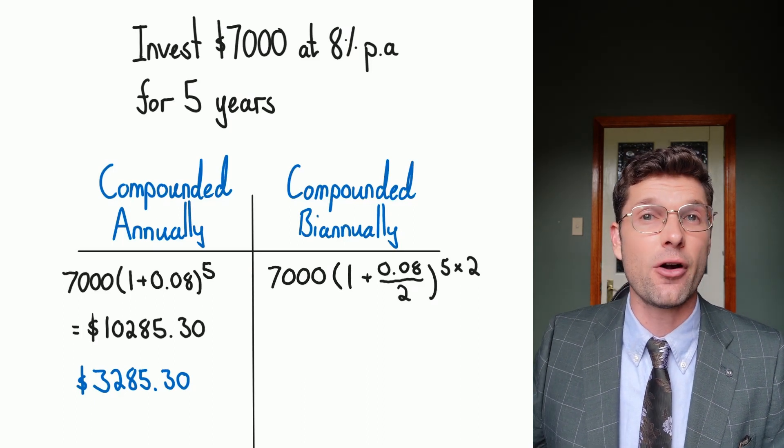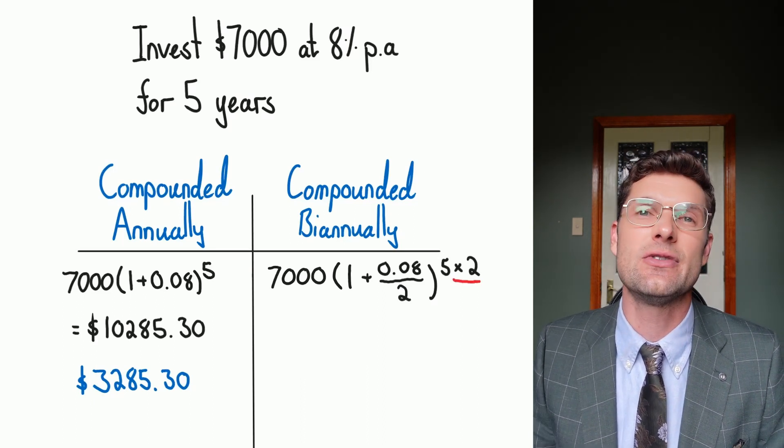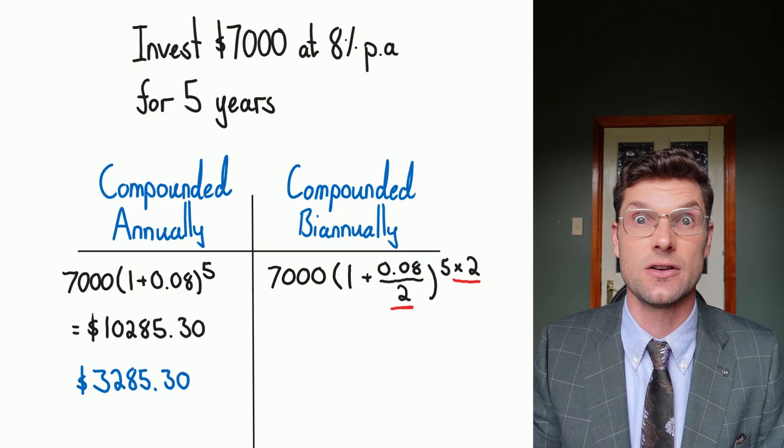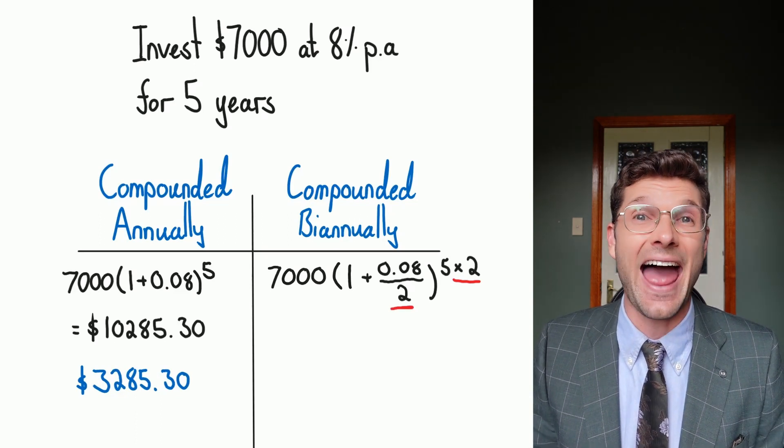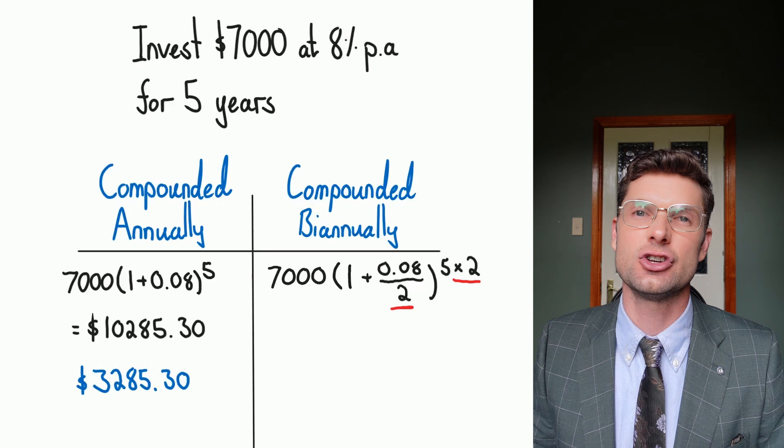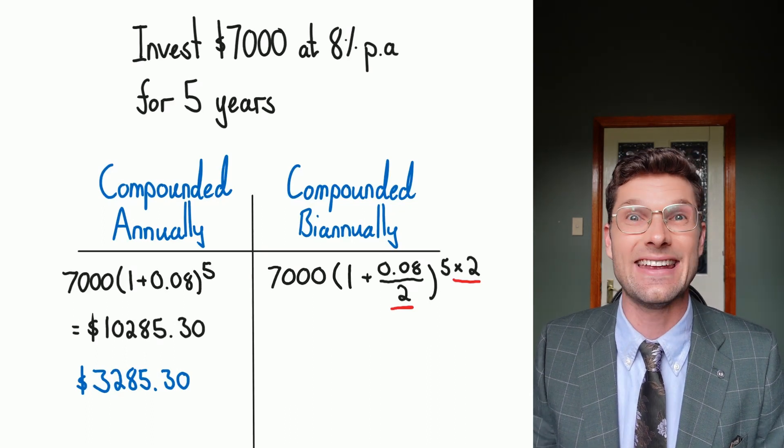The way that I can remember it is whatever I do to n times 2, I do the exact opposite to the rate, so divide by 2. So you're going to add in the same number twice, just times at the top and divide inside the bracket.